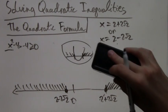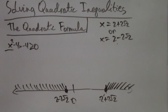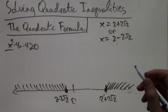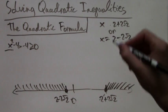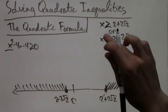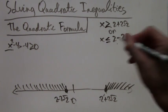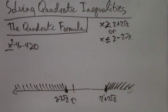So we have two intervals, and notice these intervals are very conveniently related to the roots. It's just x greater than or equal to 2 plus 2 root 2, or x less than or equal to 2 minus 2 root 2.